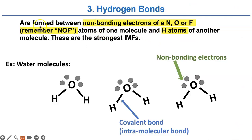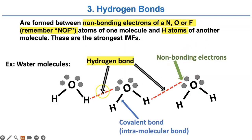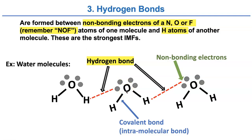The last type is hydrogen bonds. They are formed when the non-bonding electrons of nitrogen, oxygen, or fluorine atoms of one molecule are attracted to hydrogen atoms of another molecule. These are the strongest of the IMFs. For example, oxygen has two pairs of non-bonding electrons, fluorine has three pairs, and nitrogen has one pair. You can use the mnemonic NOF for nitrogen, oxygen, or fluorine — if a molecule has any of these atoms, it can make hydrogen bonds. The second molecule can be polar or non-polar; it doesn't matter. Please draw this in your notebook.